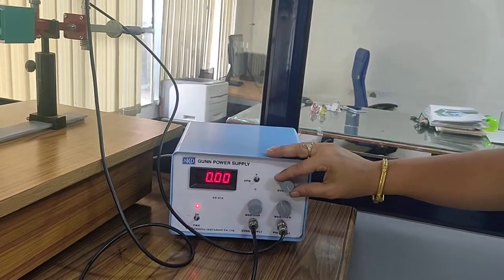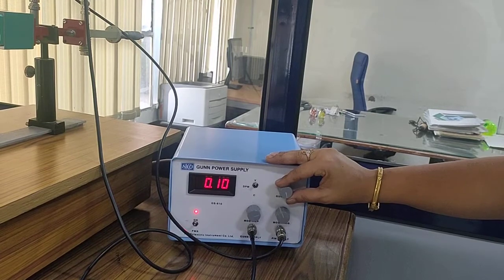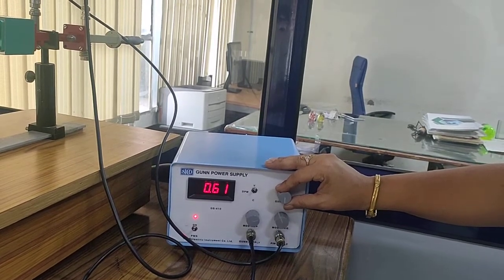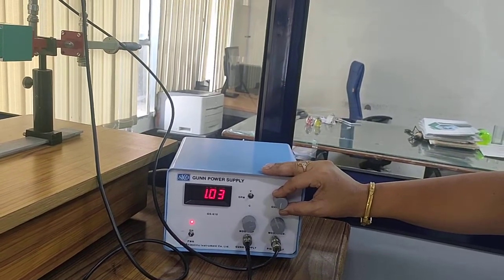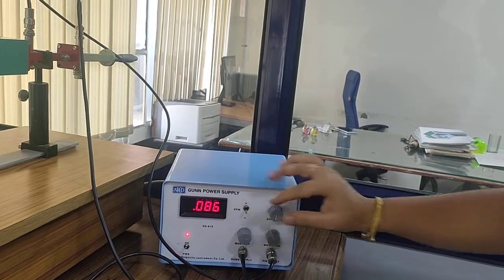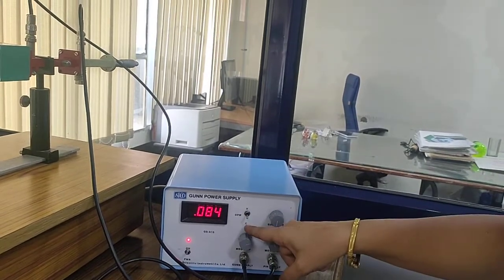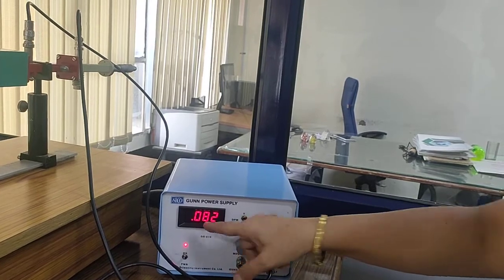Currently, she is moving the bias voltage. The value of current is 0.083.